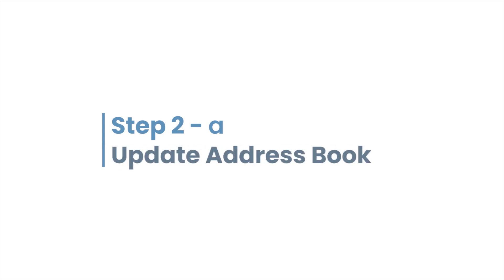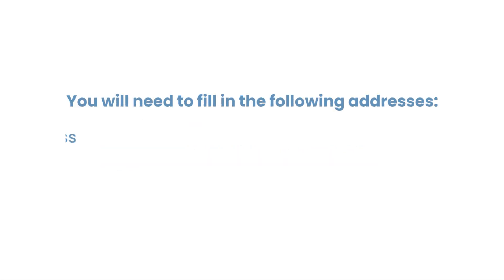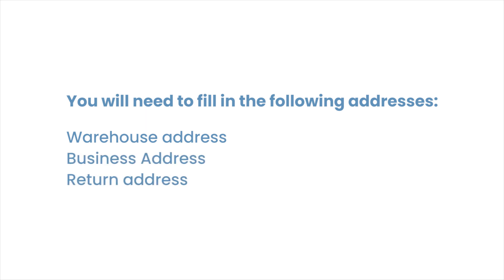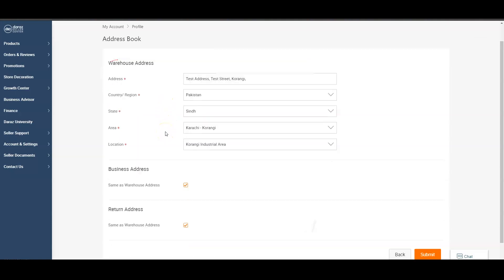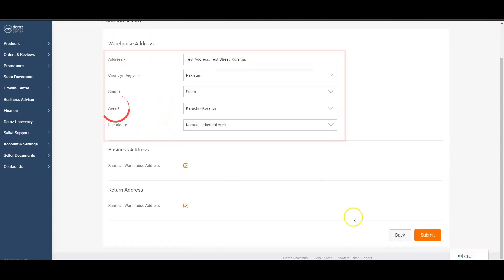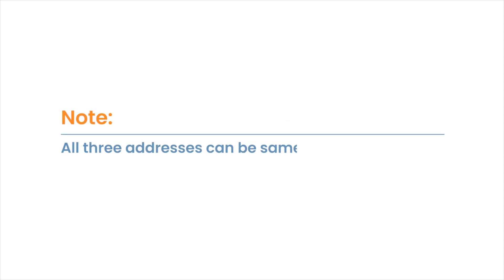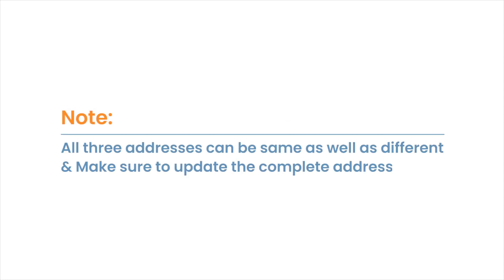Update the address book. You will need to fill in the following addresses: warehouse address, business address, and return address. For each, input the following details: address, country, state, area, and location. Note: all three addresses can be the same or different — make sure to update the complete address.